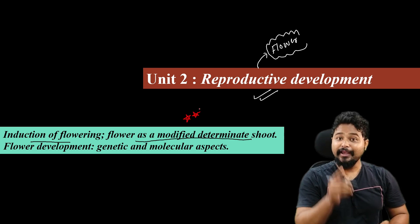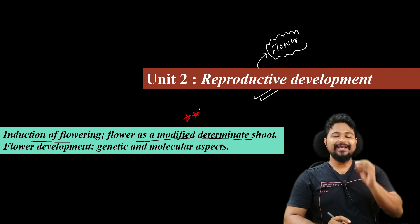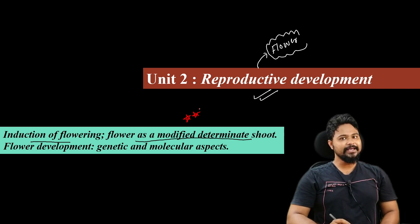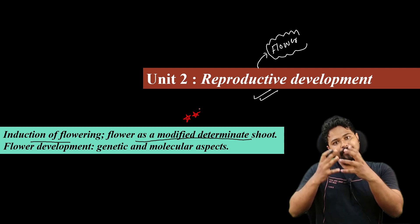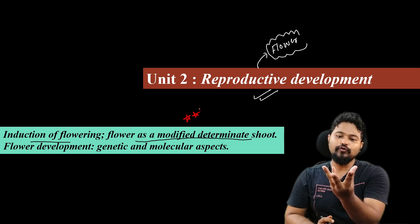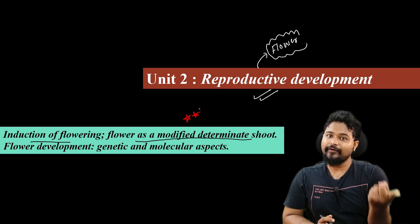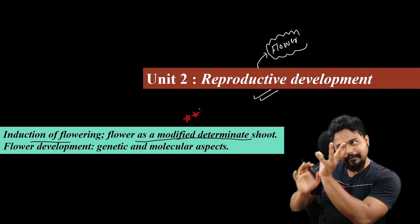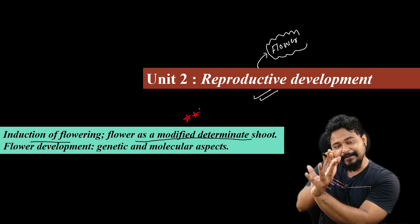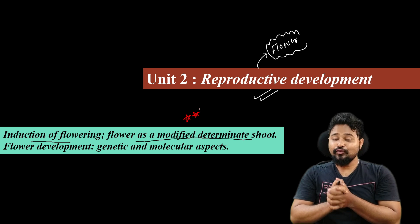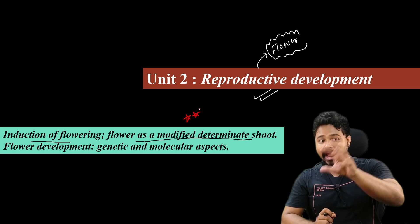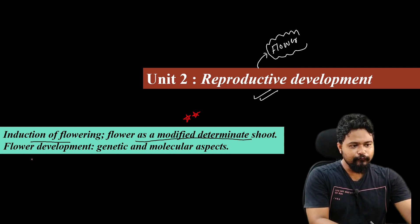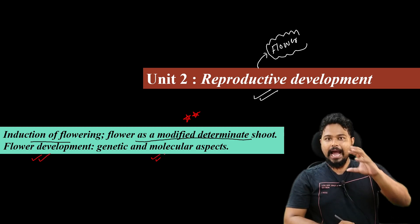This is very important from an exam point of view. The flower is a modified shoot — we will discuss why the flower is called a modified shoot, because the stem has branches and the flower shows similarity to the stem. That is why the flower is called a modified shoot.